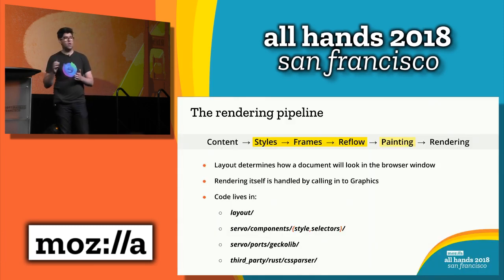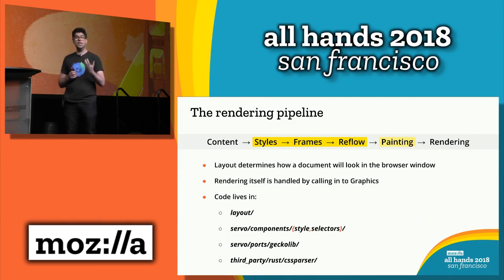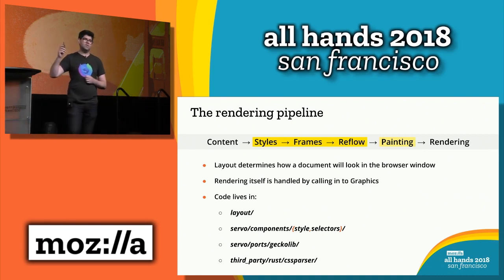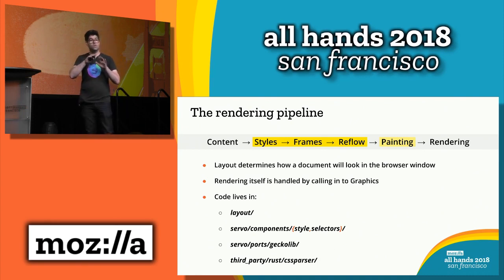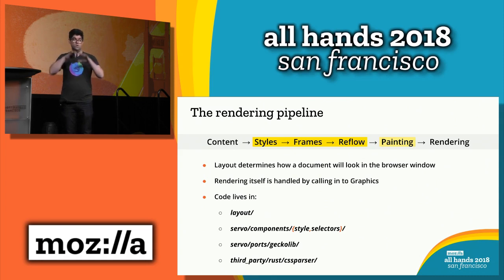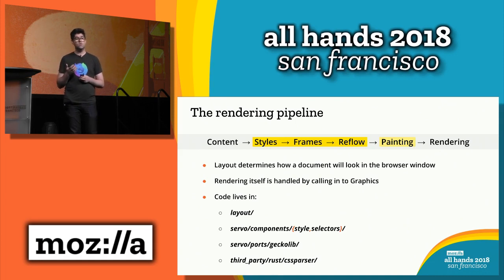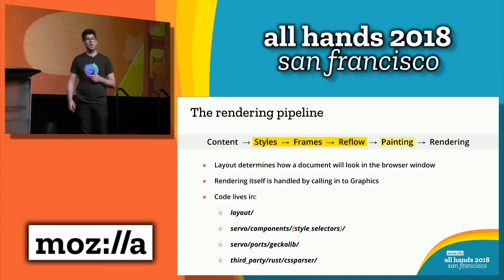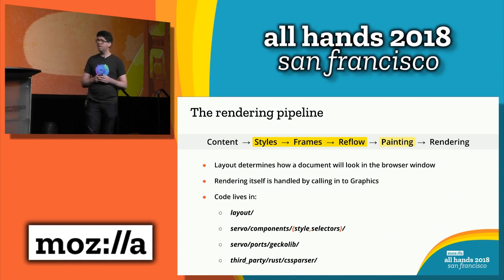This is my conception of what the rendering pipeline looks like. We have content on the left coming in as input — that's a DOM tree that has been parsed. The yellow highlighted bits are the things that the layout engine is responsible for, separated into three stages: style, frame creation, and reflow to get the actual final layout. Layout is responsible for determining how the document looks, not for doing the actual rendering. There's a lightly shaded yellow bit for painting and display list creation, which is on the boundary between layout and graphics — Matt's going to talk about that in the graphics session after me.